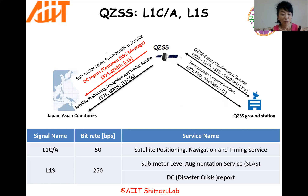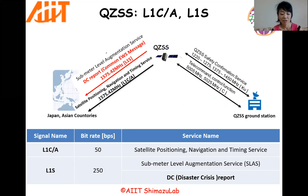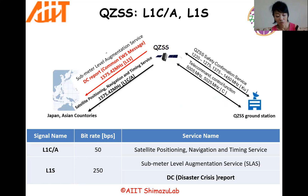We have been planning two usages of QZSS by using the 1575.42 megahertz communication band. The first one is L1C/A. This is made for positioning, navigation, and timing service. The other one is L1S. This is made for disaster crisis report called DC report. We want to use L1S for broadcasting emergency information to evacuate those in need from disasters.